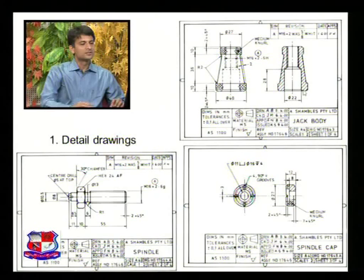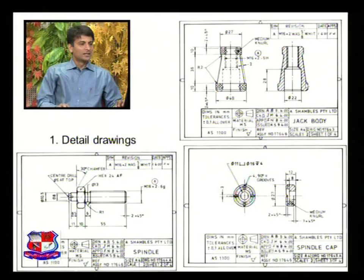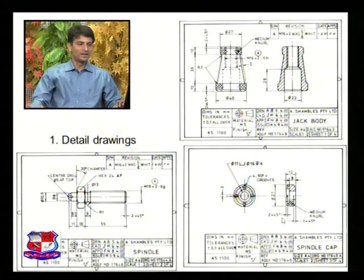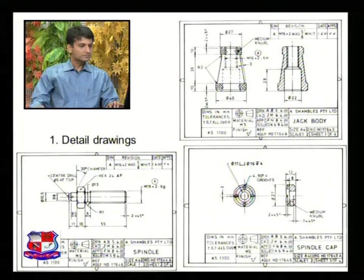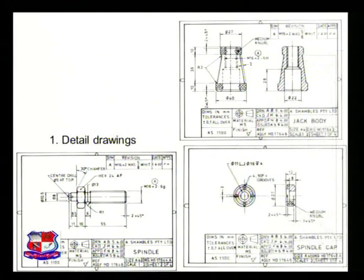This shows the detail drawing of a jack body, in which you can see the sectional view is shown, and a revision is made which is represented with the reason table. The third component is the spindle cap — the detail drawing of the spindle cap is shown here, which includes medium knurl as represented.